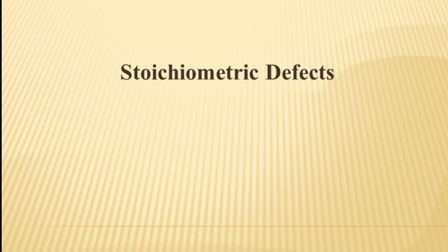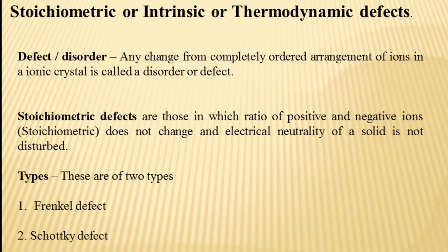Let us talk about the stoichiometric defects in ionic crystals. Stoichiometric defects are also known as intrinsic or thermodynamic defects. In an ionic crystal, there is proper arrangement of ions in the crystal lattice. If there is any change or deviation from that ordered arrangement of ions, that is known as a disorder or defect. These defects are of two types: stoichiometric defects and non-stoichiometric defects. Stoichiometric defects are those in which stoichiometry of the crystal is not disturbed — the ratio of positive and negative ions as shown by the chemical formula remains the same.